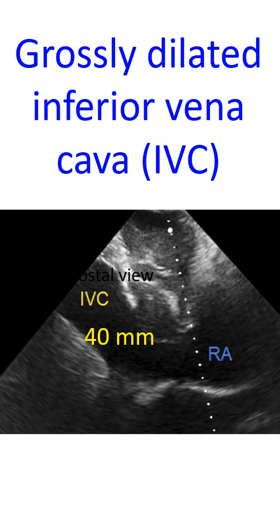IVC measurement is often used to guide fluid resuscitation in the acute care setting instead of the conventional measurement of central venous pressure by a catheter. This is convenient being non-invasive and easily available in modern emergency departments and critical care intensive care units equipped with a point-of-care ultrasound machine.